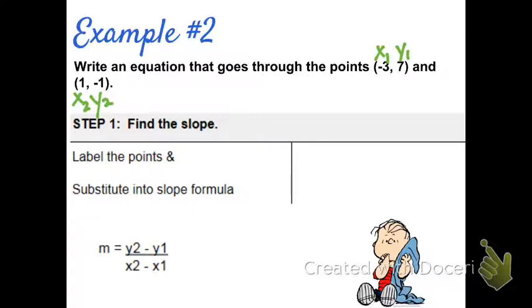So when I substitute those in to my slope formula, I get negative 1 minus 7, because I'm subtracting my two y's, and then in the denominator, I get 1 minus negative 3.